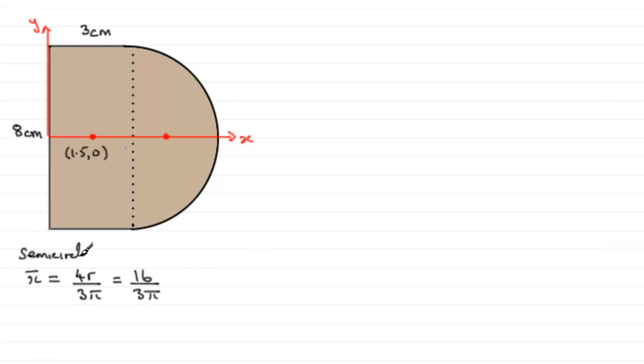So when it comes to putting these coordinates in for the semicircle, we know the distance from the dotted line to here is 16 over 3π. But we've got to go from the origin here all the way to this point. So it's going to be 3 plus 16 over 3π. And then as for the y coordinate, well that's going to be 0 because it's on the x-axis.